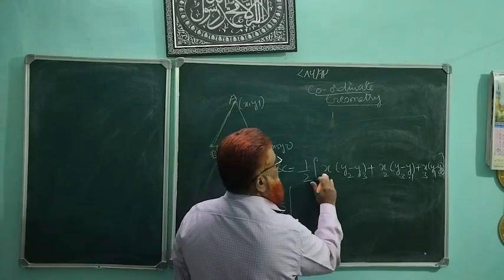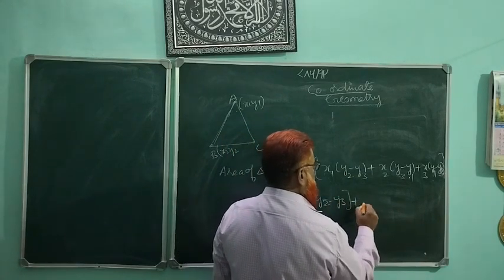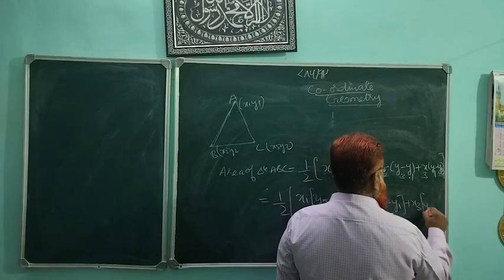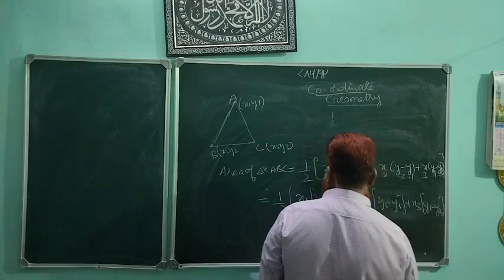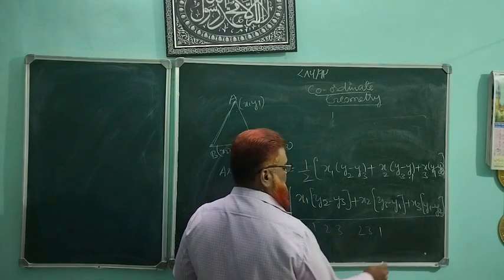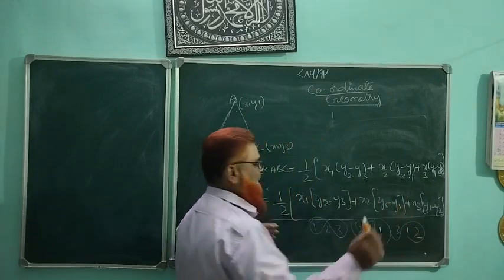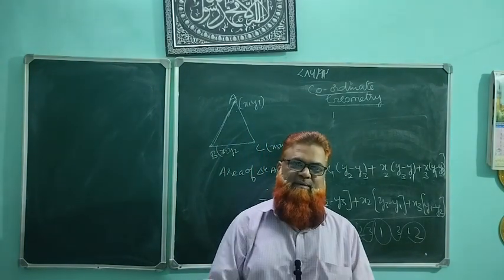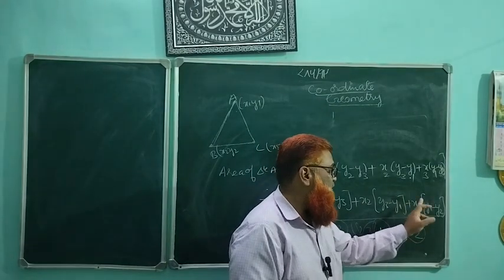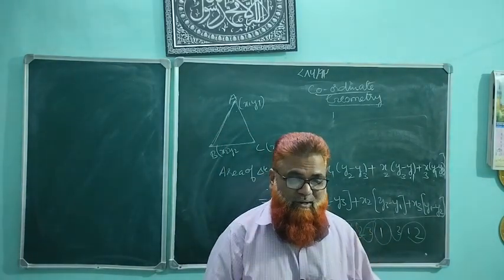Once again: area equals half into [x1(y2 minus y3) plus x2(y3 minus y1) plus x3(y1 minus y2)]. The key pattern is subscripts 1, 2, 3 then 2, 3, 1 then 3, 1, 2. Just write x times (y minus y) three times and fill in those cyclic subscripts. By this method we can write the formula without mugging up — in a logical and tricky way.